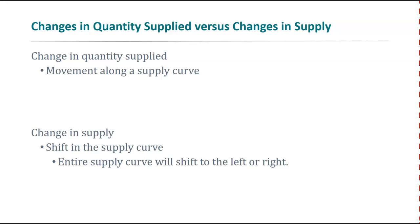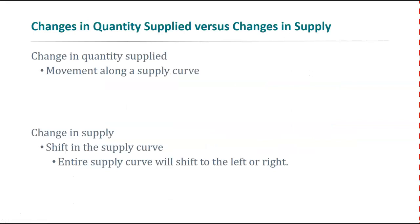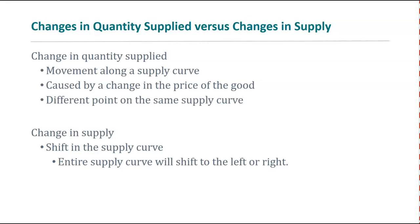What causes a change in quantity supplied? That's a movement along the supply curve — a movement from one row to another in the supply schedule. All that changes is the price. If I tell you the price changes, you go back to your table and see that the quantity you're going to bring changes. A change in quantity supplied is a movement along the supply curve, and it's caused by a change in the price of the good — it's a different point on the same curve.